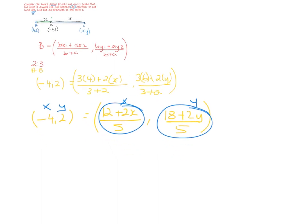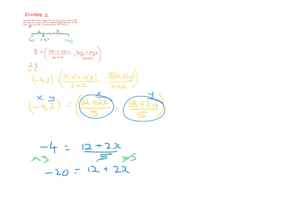If I do that, I would have -4 equals (12 + 2x)/5. Obviously I'm going to multiply both sides by 5 to get rid of that, and I'm going to get -20 equals 12 + 2x. You know how to finish that off yourself, nice and easy, first year stuff. You should get x equals -16.